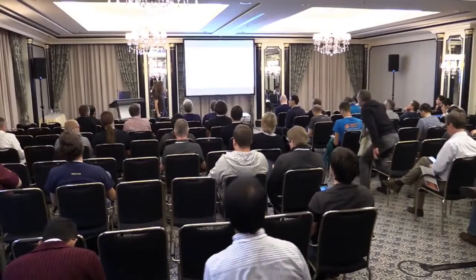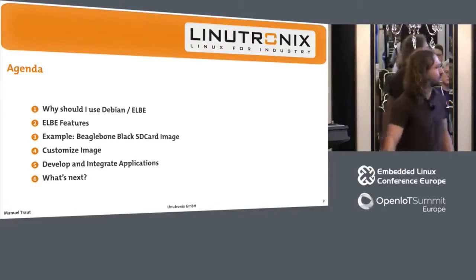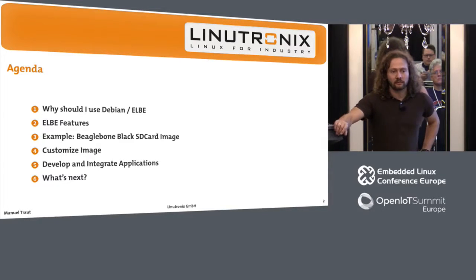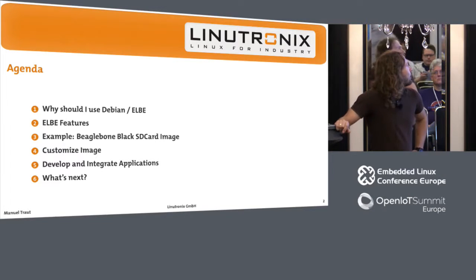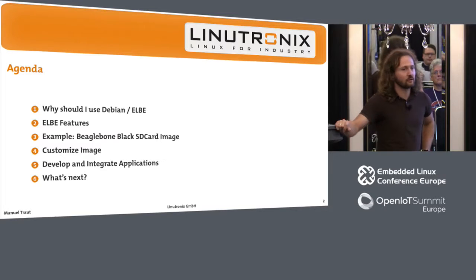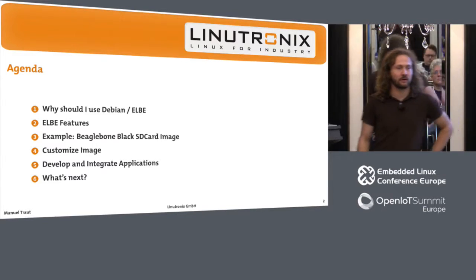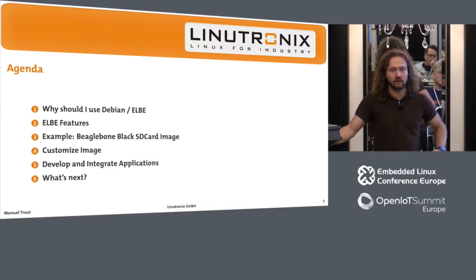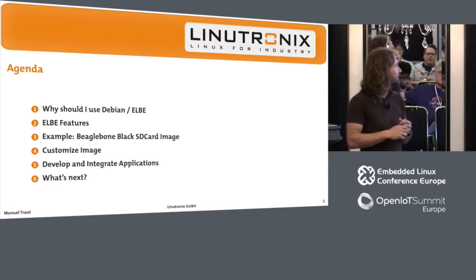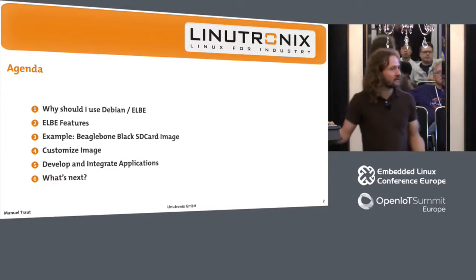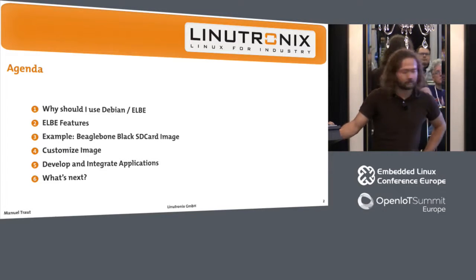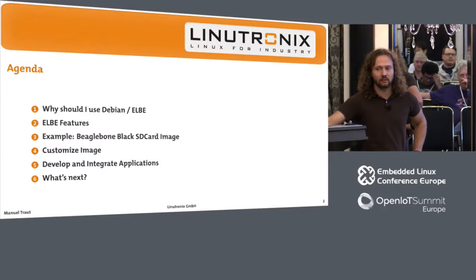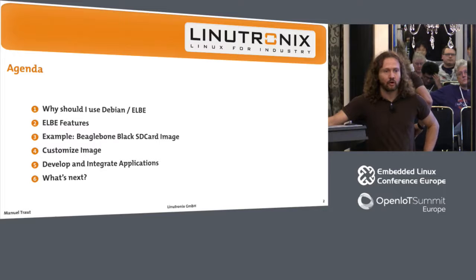Let's see what the plan is for today. I want to answer the question: why should I use Debian, why should I use Elbe, and what other methods are there to create Debian-based systems or build embedded systems. Then I want to talk about the features Elbe currently provides, show an example using the Texas Instruments BeagleBone Black board to build an SD card image, look at customizing this image for a specific need, and show how to develop and integrate own applications into that image. The last thing will be thinking about what's next — the direction of development in Elbe itself. Maybe you also have ideas about what should be possible with Elbe.